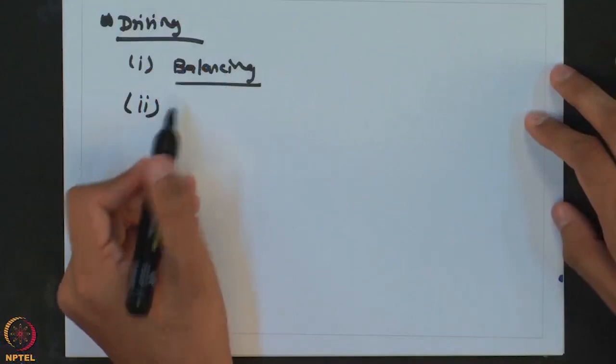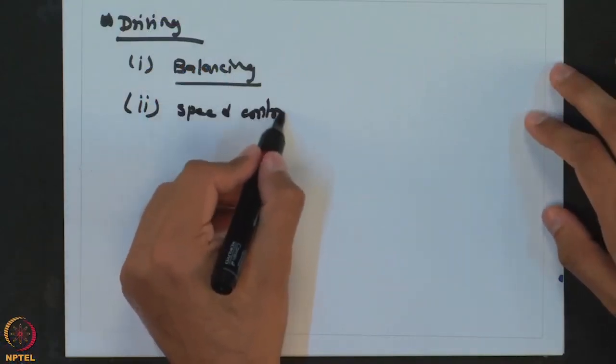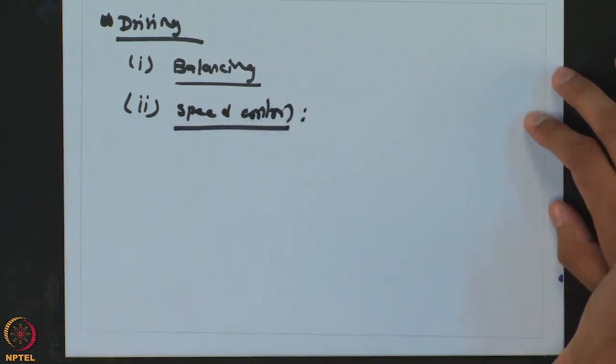If the bicycle is going steadily and is balanced, no action is taken. As soon as you go over a pebble and become inclined toward one direction, the natural tendency is to shift all your weight to the other side, so that the center of gravity shifts back to the center and you maintain balance. So balancing is a feedback control where you try to maintain the position of the center of gravity.